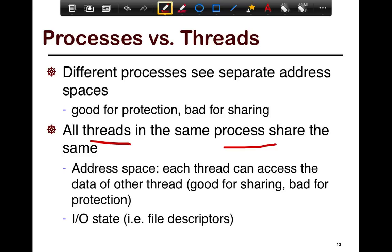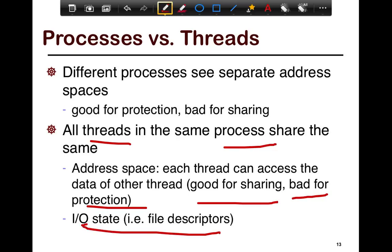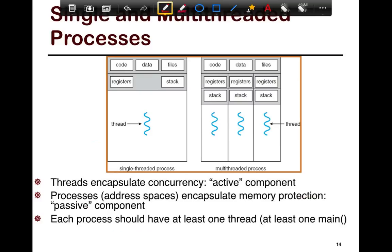Threads share the heap and everything other than the stack. You need a separate stack for each thread so that each thread can run a different function. If stacks were shared, all threads would be running the same function. Each thread can access the data of the other threads — good for sharing, though not for protection — but that's intentional since you actually want threads to see each other's data. All I/O state is also shared, such as file descriptors, so if multiple threads write to the same file you must control that explicitly.